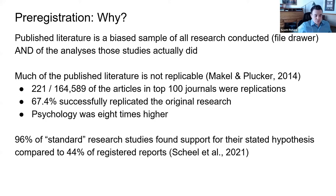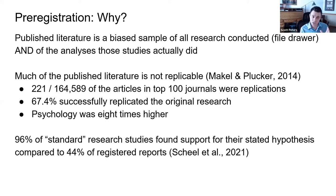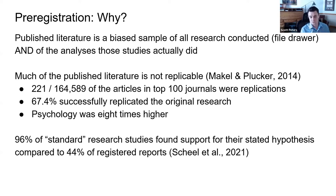Think of the published literature in your field as a big circle — the published research is itself a biased sample of all research that has ever been conducted. Not all research ends up in the published literature; some is in dissertations, theses, think-tank papers, or was never published at all because of the file drawer effect, where someone conducted a study, didn't like the result, or only published part of it.